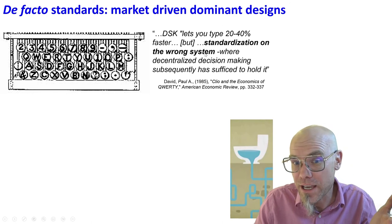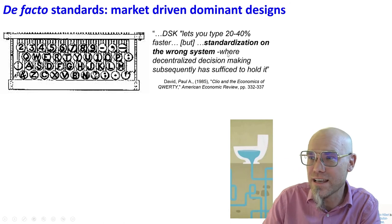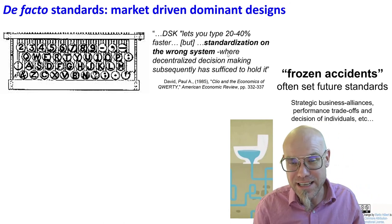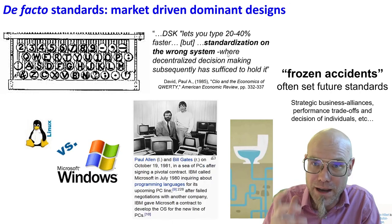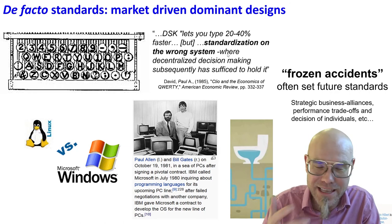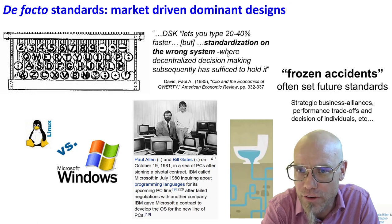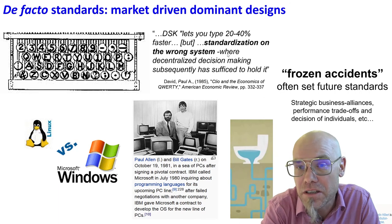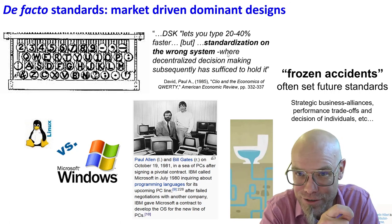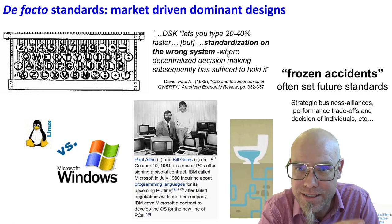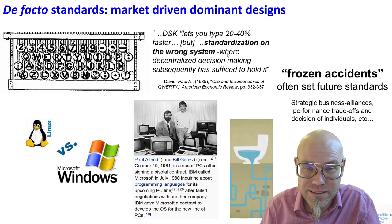The DSK standard lets you type up to 40% faster, but we standardized on the wrong system. This happened through what we call frozen accidents — historical contingencies that lock in a standard. Another example: when Paul Allen and Bill Gates at Microsoft partnered with IBM, that business alliance made the Windows operating system the de facto standard. Nobody in a formal standards body agreed — a group of people made a business deal and started to dominate. That's what we now understand as the technology of an operating system.